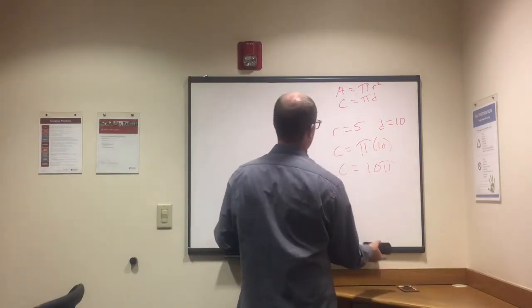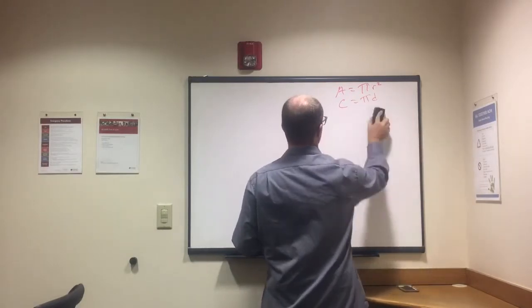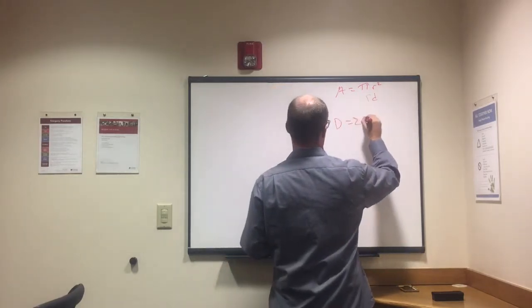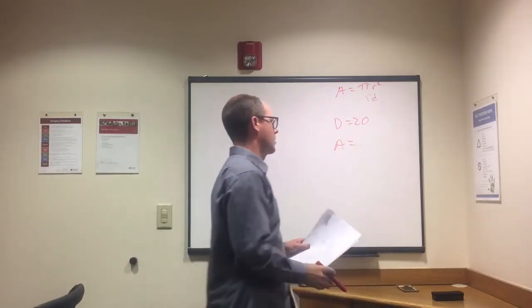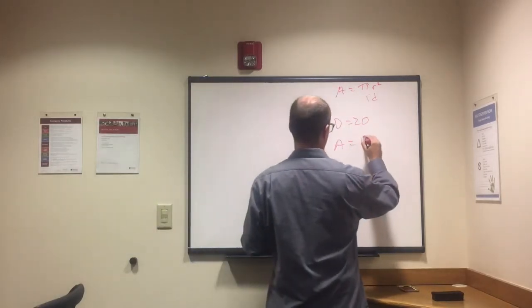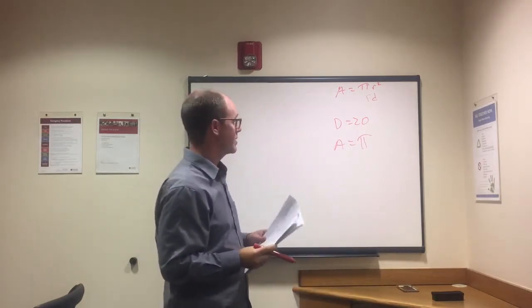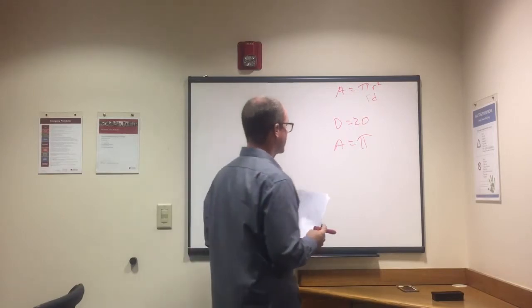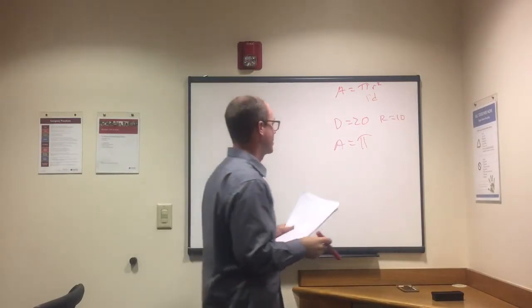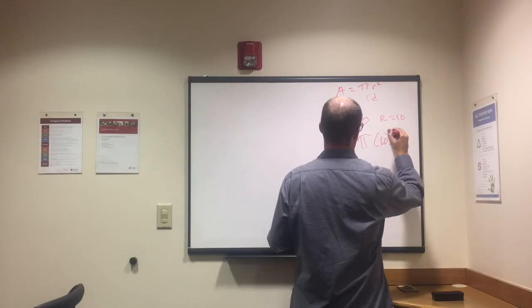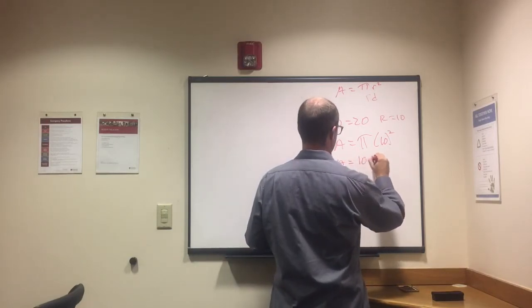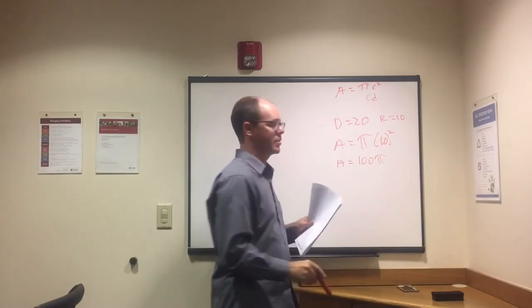We know that area equals pi r squared. Now if the diameter is 20, radius is half as big as diameter, so radius is 10. Area equals pi times 10 squared. Ten squared equals 100, and area equals 100 pi.